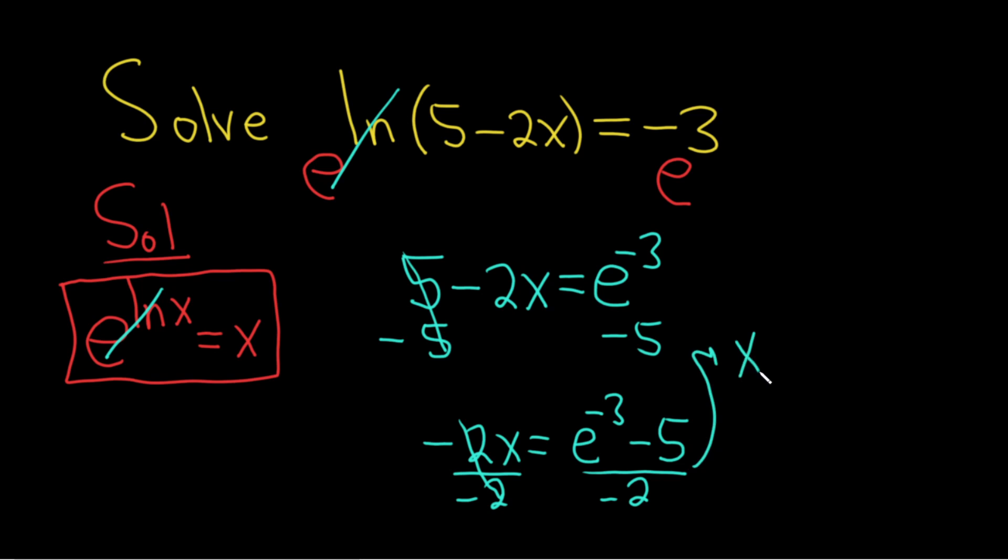So x is equal to... it gets a little bit tricky here. It's going to be this piece here over negative 2, like this: e to the negative 3 over negative 2, and minus 5 over negative 2.